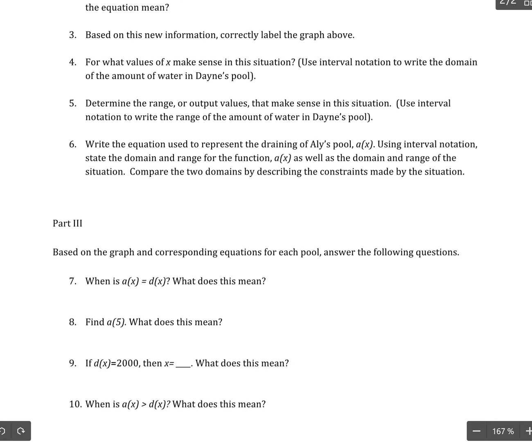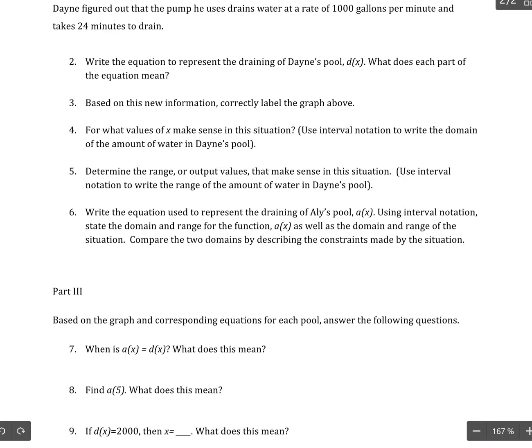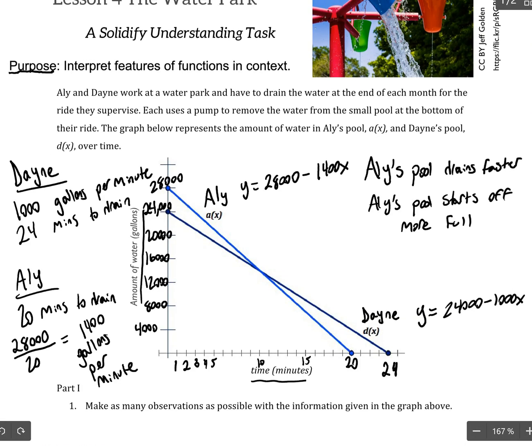So, let's go to part 3. We're going to answer some of these questions, which are helping us to interpret these functions in context. So, it says, when A of X equals D of X, what does this mean? So, first of all, let's look at the graph and see when does A of X equal D of X. So, that's right there where the two functions intersect. A of X equals D of X.